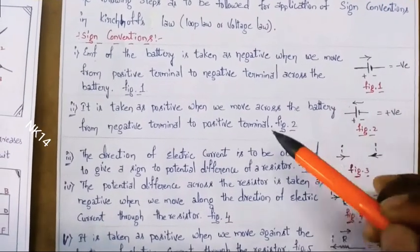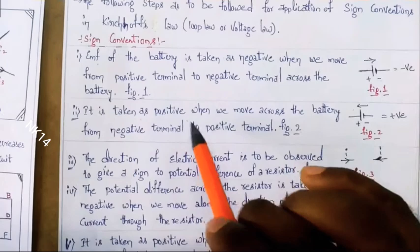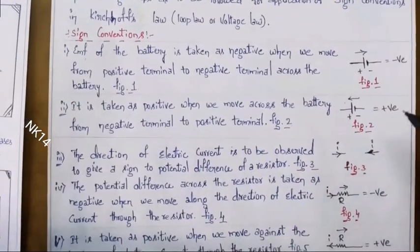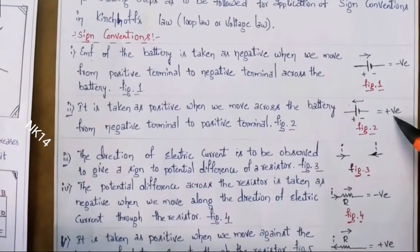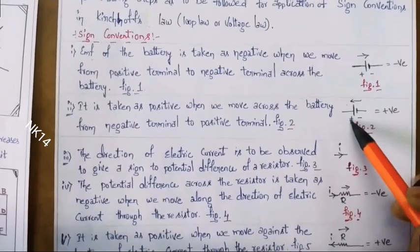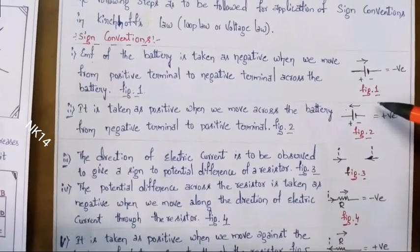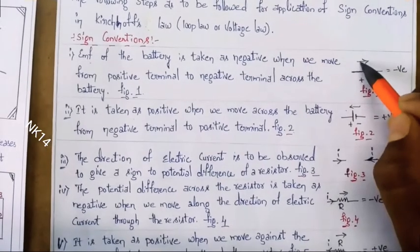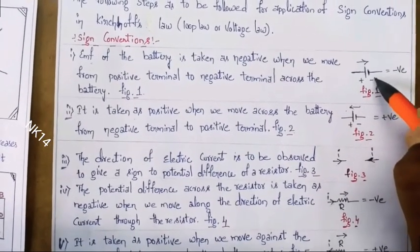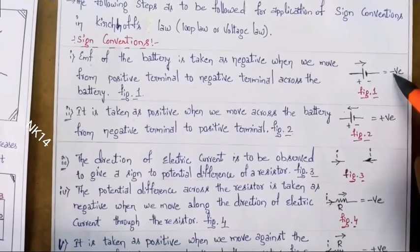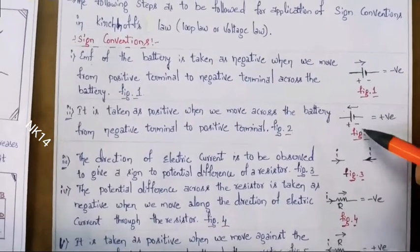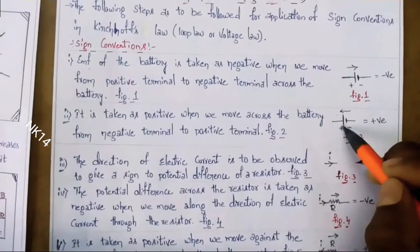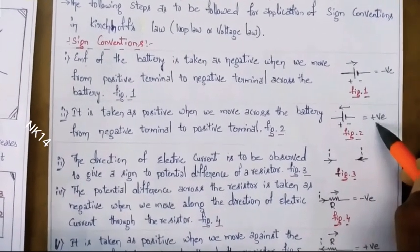The opposite applies in the next point: the EMF of the battery is taken as positive when we move across the battery from negative terminal to positive terminal. Both points are opposite to each other. If the EMF is moving from positive to negative, the output is negative, so we take it as negative voltage. If the EMF is going from negative to positive, the output is positive, so we take it as positive voltage.